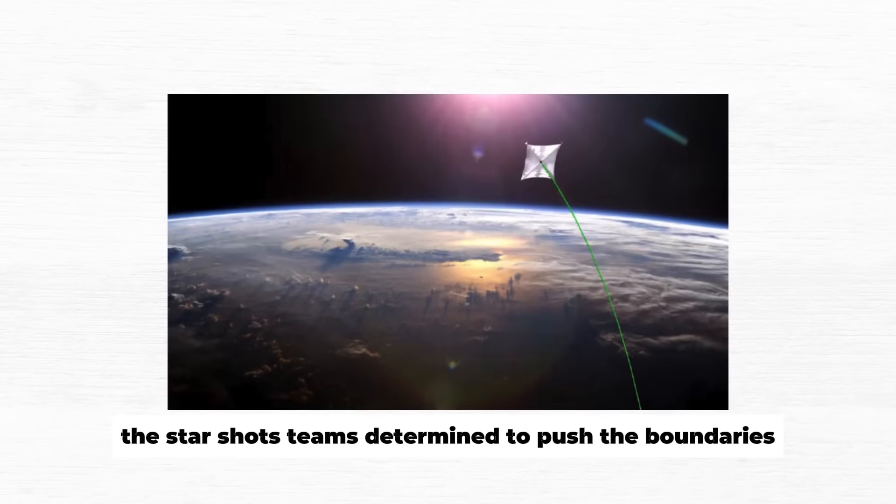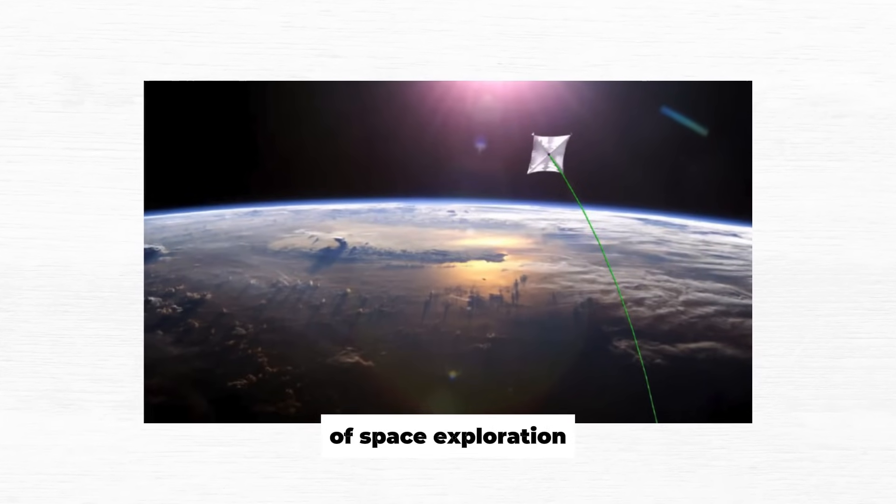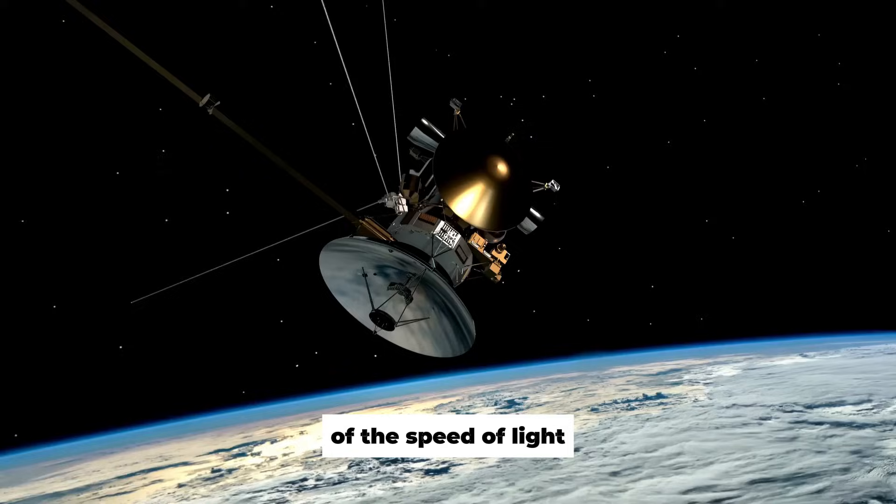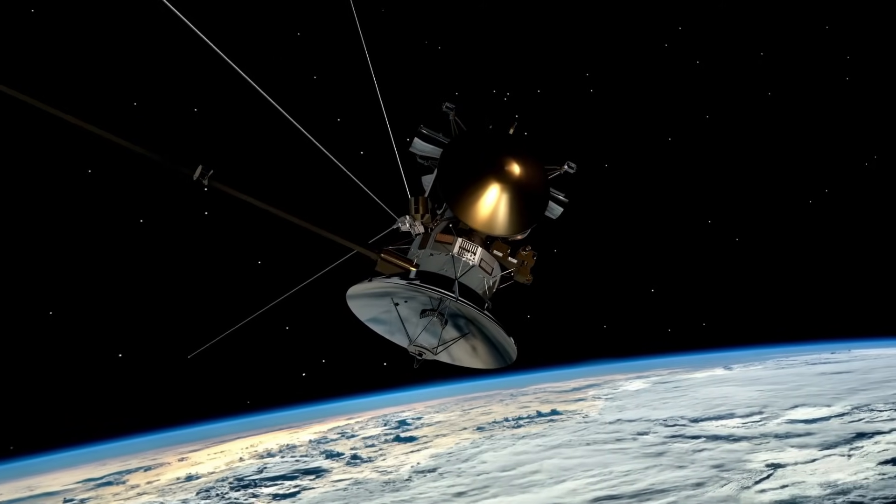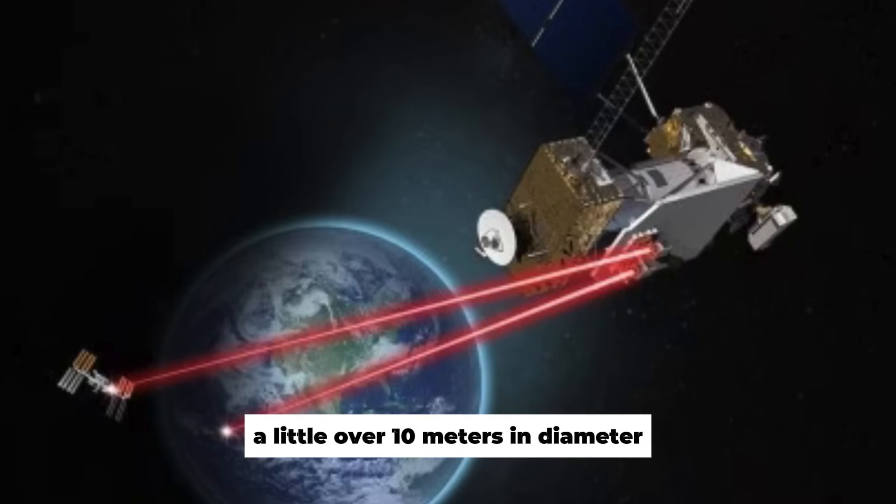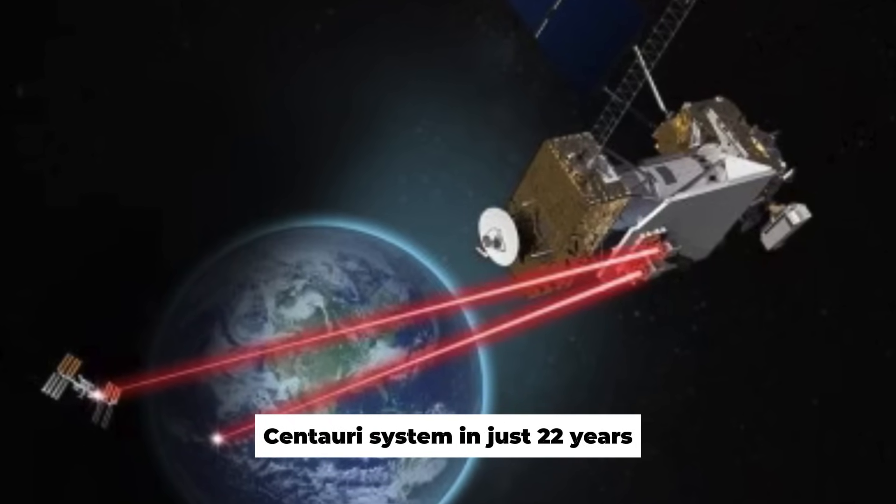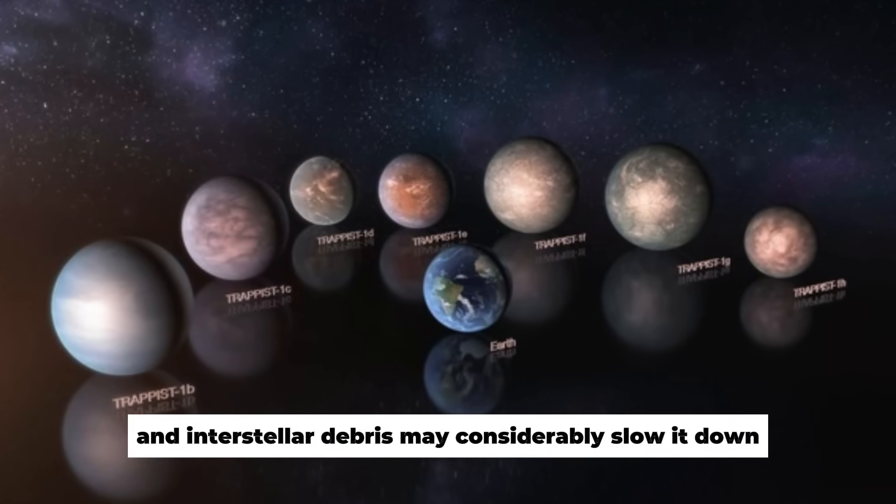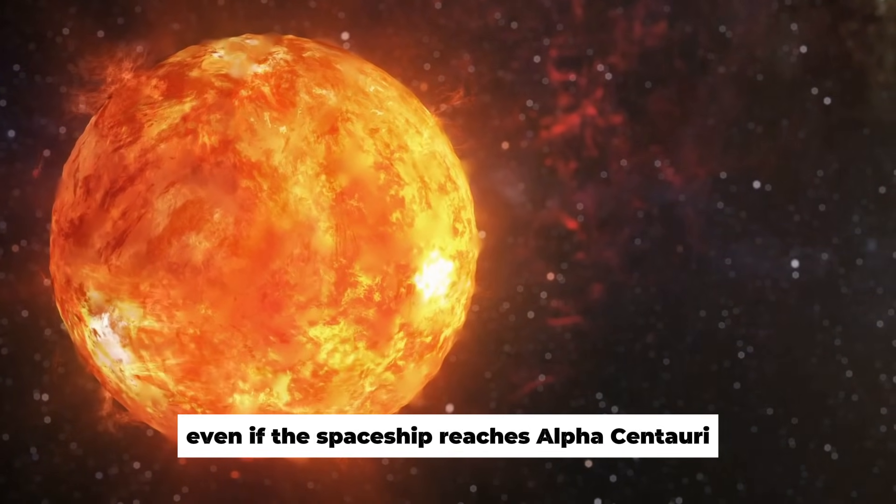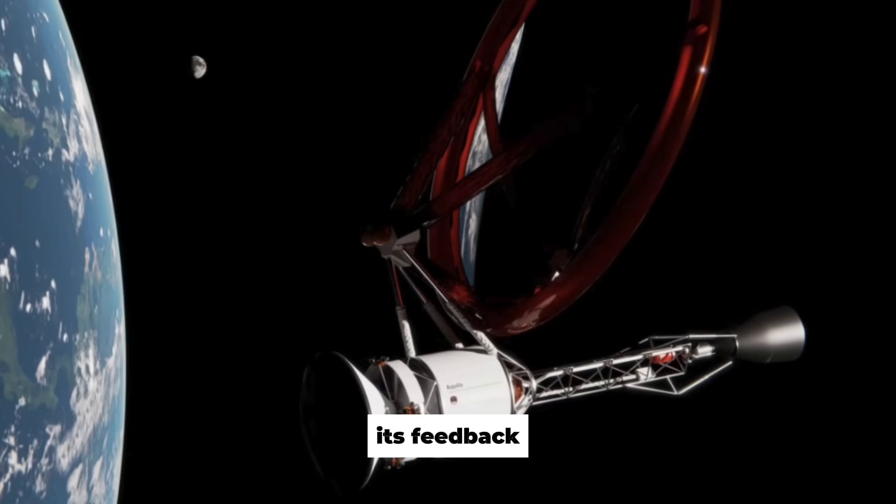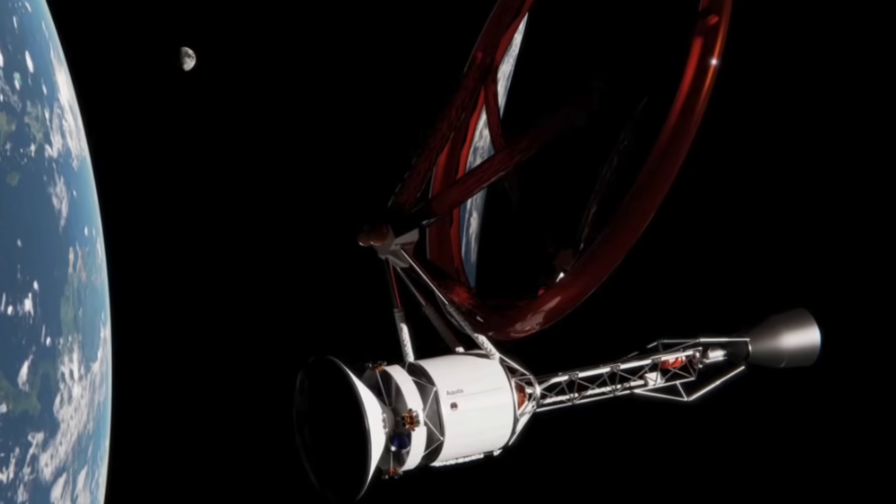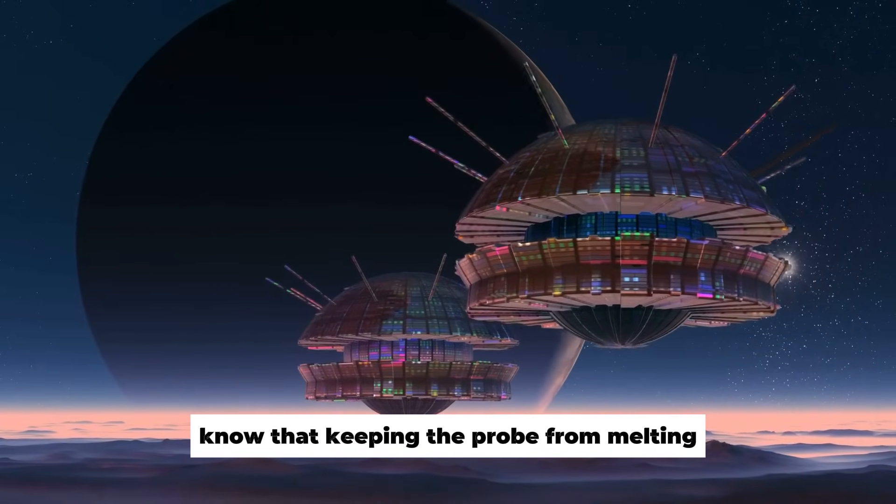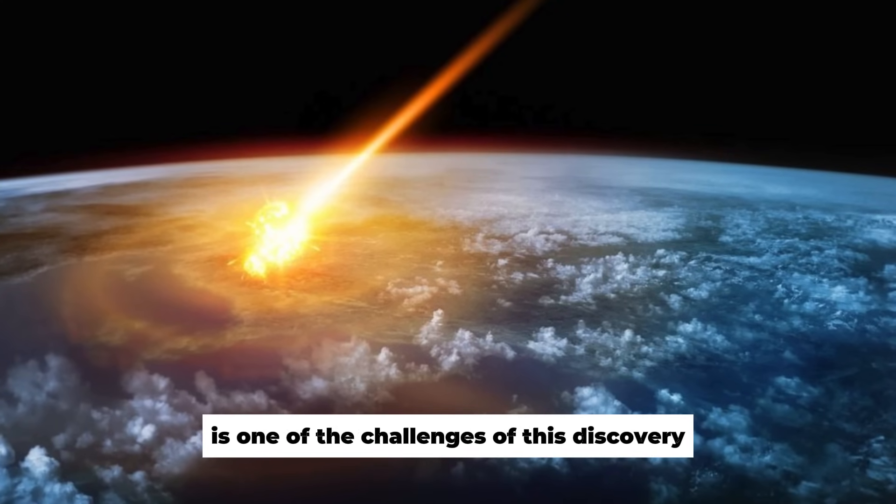The Starshot team is determined to push the boundaries of space exploration. The object hurtling through space will be moving at the astonishing 20% of the speed of light when the lasers are turned off. The spacecraft would be a little over 10 meters in diameter and could reach the Alpha Centauri system in just 22 years. However, the gravitational pull of the Sun and interstellar debris may considerably slow it down. Even if the spaceship reaches Alpha Centauri, its feedback will take another four years to reach the Earth. Babatunde and Sibley, who are part of the Starshot, know that keeping the probe from melting is one of the challenges of this discovery.